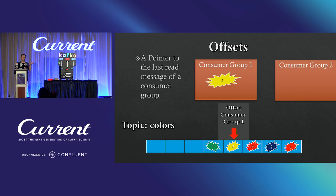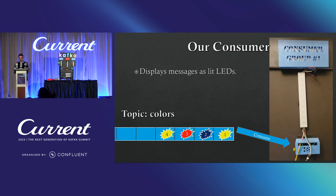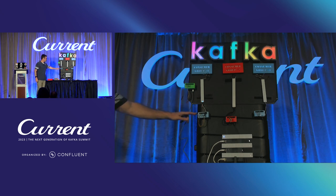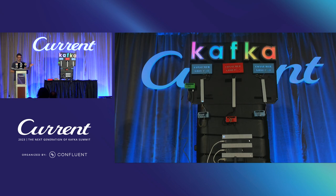You could have a different consumer group — say a claims application — that also cares about address changes. Consumer group two would start up, potentially starting at the beginning, with its own separate offset that keeps track of where it is in reading messages on the topic. Our consumers are these vertical bars here. We have two blue ones on the outsides and a red one in the inside — all Raspberry Pi Zeros running Linux with Python code using the consumer APIs to interact with our topic. As messages come through and consumers read a message, it'll light up on their bar.